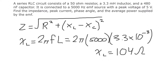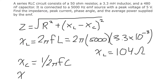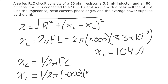Now we can calculate the capacitive reactance. The formula is very similar to the inductive reactance — we just take the reciprocal: XC equals 1 over (2π f C). Plugging in, XC equals 1 over (2π times 5000 hertz times 480 nanofarads), where nano is times 10 to the negative 9. The result is a capacitive reactance of 66 ohms.